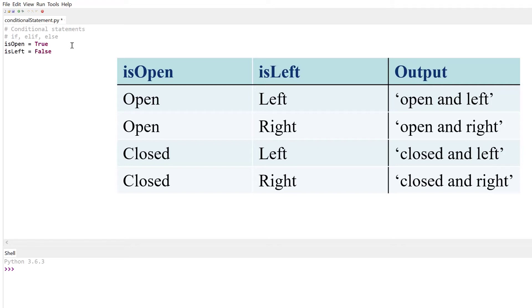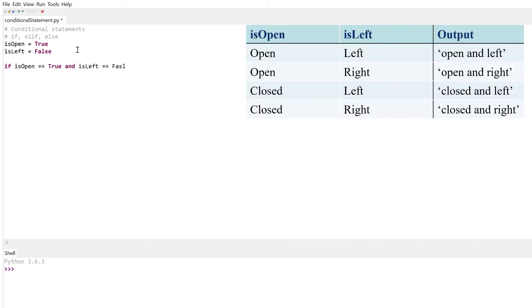One of the conditions from the truth table will be if is open is equal true and is left is equal false. You end the statement with a colon. The output should be the string open and right. The white space is used to group blocks of code in Python.